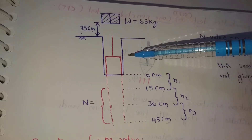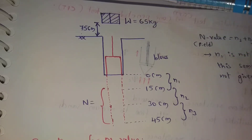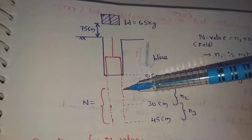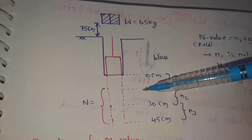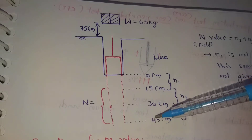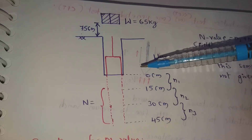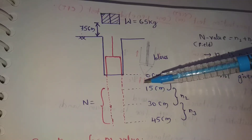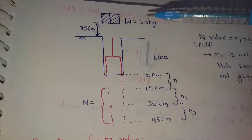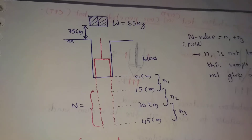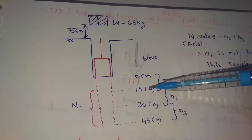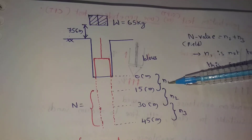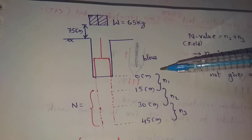For example, at some depth we encounter top soil and loose soil. The penetration starts from 0 cm. We record the N value for every 15 cm increment. The first 15 cm reading (0 to 15 cm) is neglected because it represents disturbed top soil. The N value is taken from the next two increments — 15 cm to 45 cm — which gives the SPT N value.